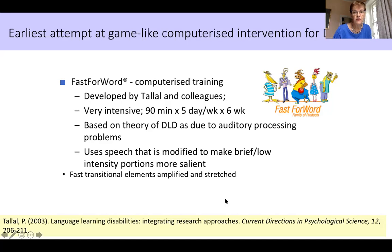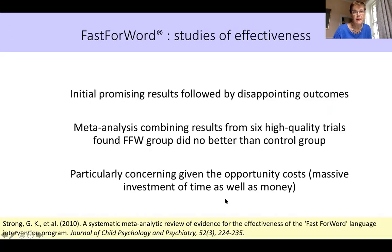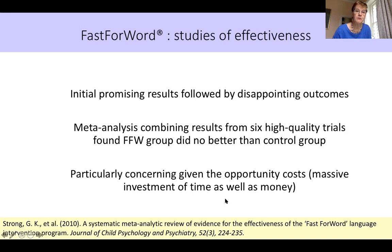Initially there was huge enthusiasm for Fast ForWord, but over time it became clear that initial promising results really didn't look so good when people were doing proper clinical trials methodology using control groups and reasonable sample sizes. A meta-analysis that looked at six high-quality trials didn't find any benefit for Fast ForWord over a control group. This was particularly concerning given the opportunity costs in terms of time and money, and really quite disappointing because you would have thought that this amount of intensive training should have some effect.